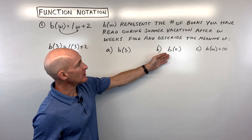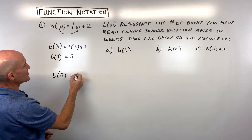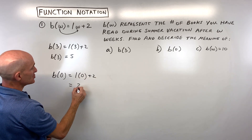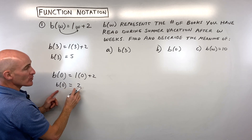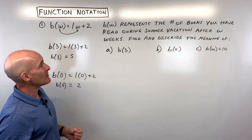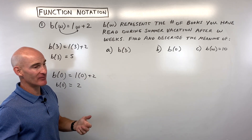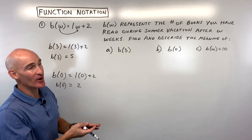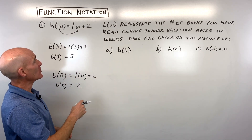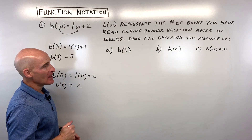What is B of 0? We replace W with 0: 1 times 0 is 0, plus 2 is 2. So B of 0 equals 2, meaning after 0 weeks we've read two books. That could mean you already had a stack of books and had read two of them before summer vacation started — you plan on reading one book per week, and the initial number of books read is two.